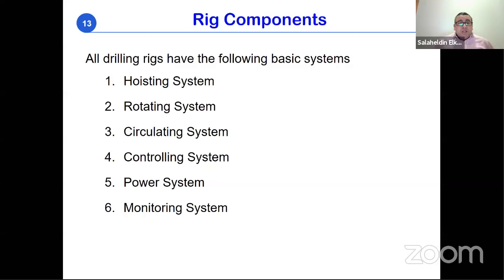Every rig, offshore or onshore, has six systems: the hoisting system, rotating system, circulating system, controlling system, power system, and monitoring system. Some older books list only five systems, but the monitoring system has been added as a sixth since real-time recording of drilling parameters became standard around 2013–2014.